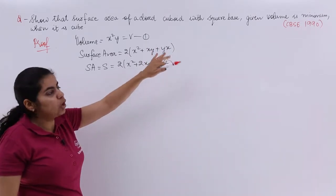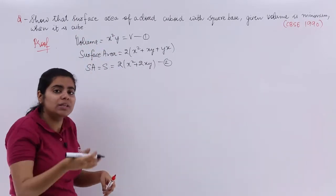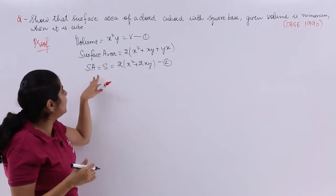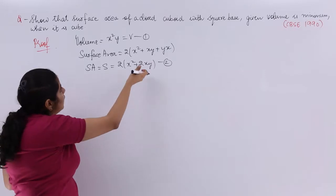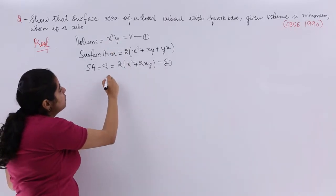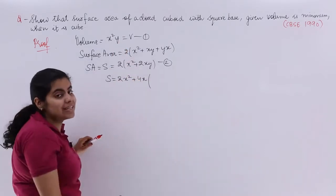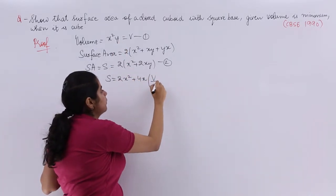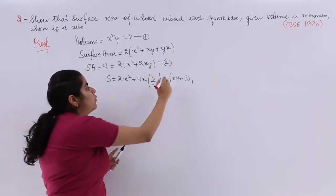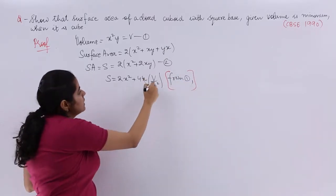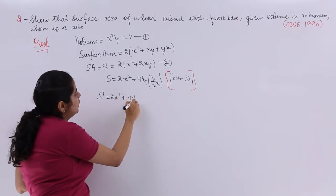Now given to me is given volume is minimum and it is talking to show about the surface area. To show about the surface area means you have to differentiate S. Differentiating S means you need only X and X and not Y. So let me find out the value of Y and put here. So it is twice X square plus 4X multiply by Y is V upon X square, and where is this from? It is nothing but from equation 1.